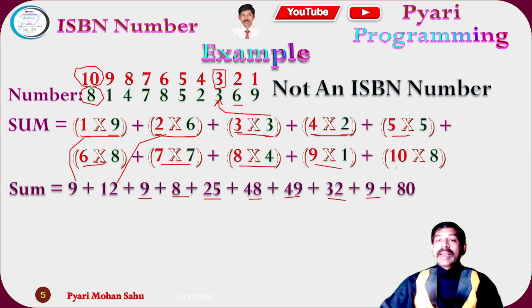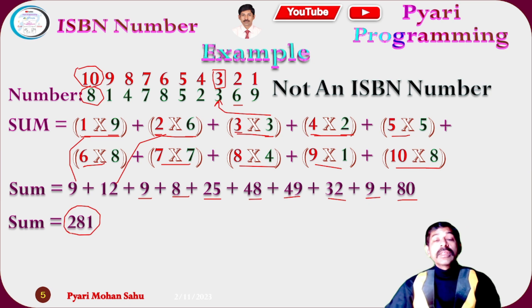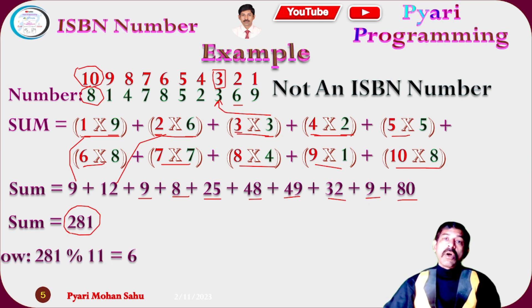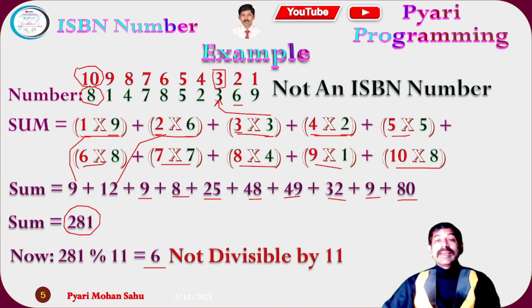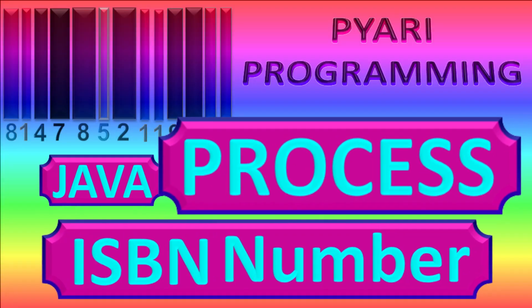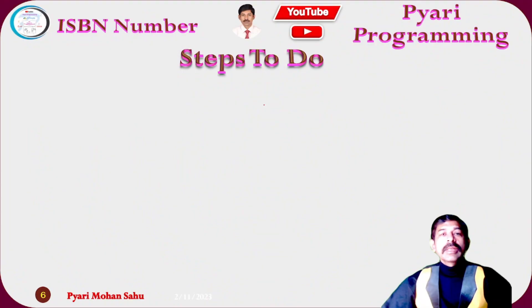The sum of all products is 281. We check whether 281 is divisible by 11: the remainder is 6, not zero. So this is not a valid ISBN number.